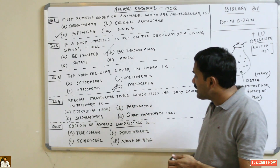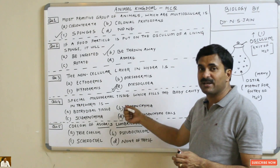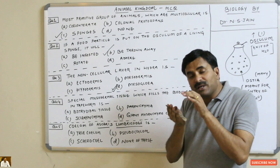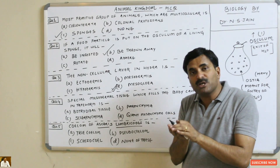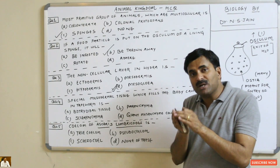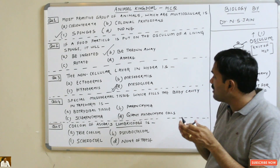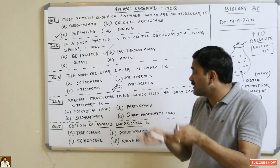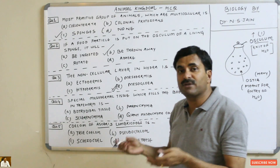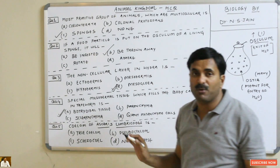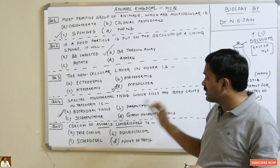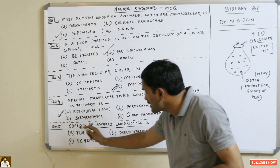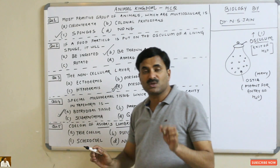The fourth question asks about a special mesodermal tissue, which is asked many times in exams. In tapeworms, which belong to phylum Platyhelminthes, there is a special mesodermal tissue that fills the body cavity. That mesodermal tissue is called botryoidal tissue. So the answer is botryoidal tissue — a special mesodermal tissue that forms the body cavity of the tapeworm.